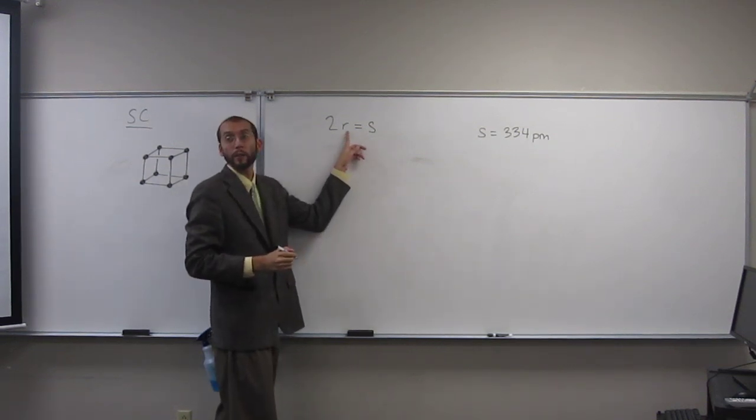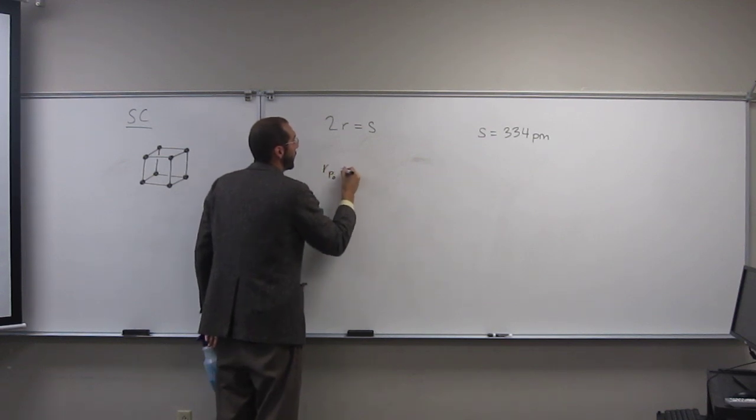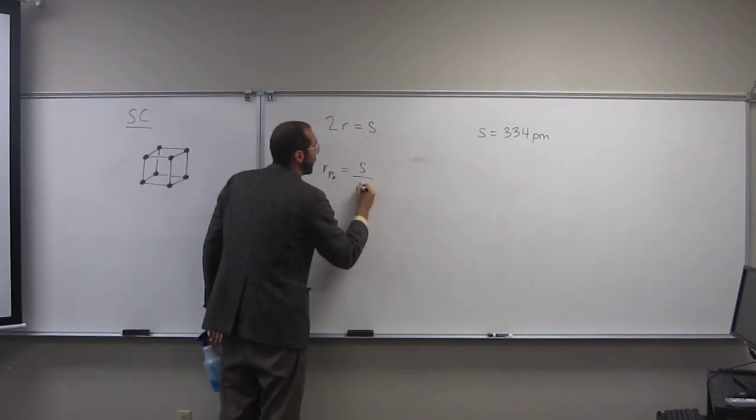Well, in this case, the radius is going to be r of polonium. So r polonium equals s divided by 2.